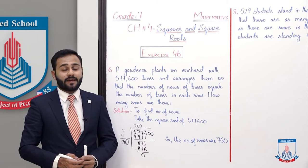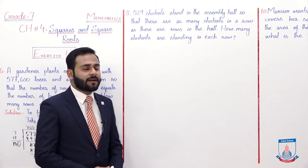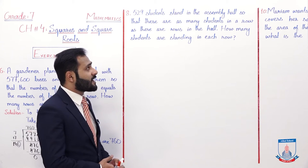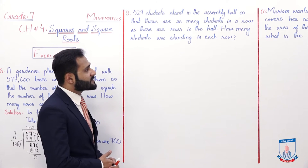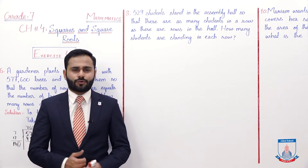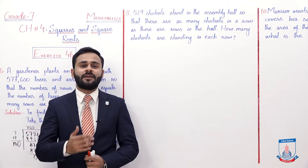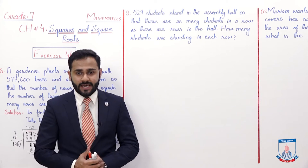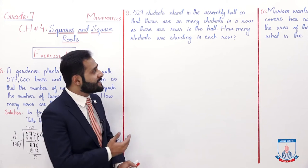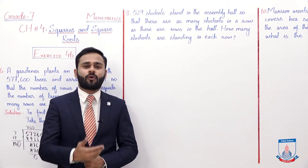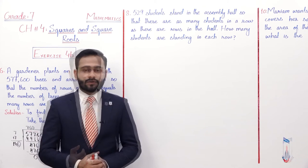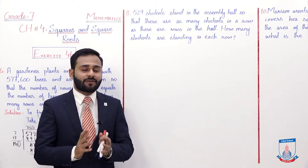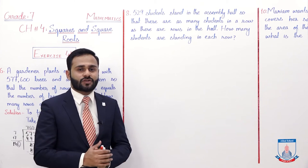Question number 8. 529 students stand in the assembly hall, so that there are as many students in a row as there are rows in the hall. How many students are standing in each row? We will find it by the square root method.